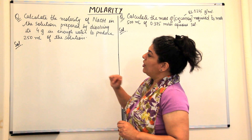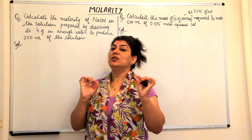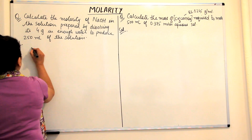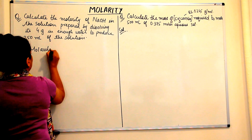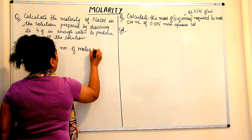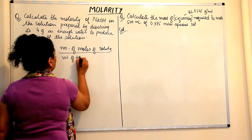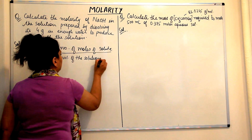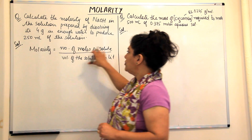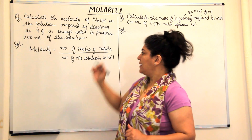We have been given 4 grams of sodium hydroxide dissolved in 250 milliliters of the solution. What is the molarity? Molarity is equal to number of moles of the solute upon volume of the solution in liters. So we need two things: the number of moles of the solute, and the volume of the solution in liters. Let us take them one by one.